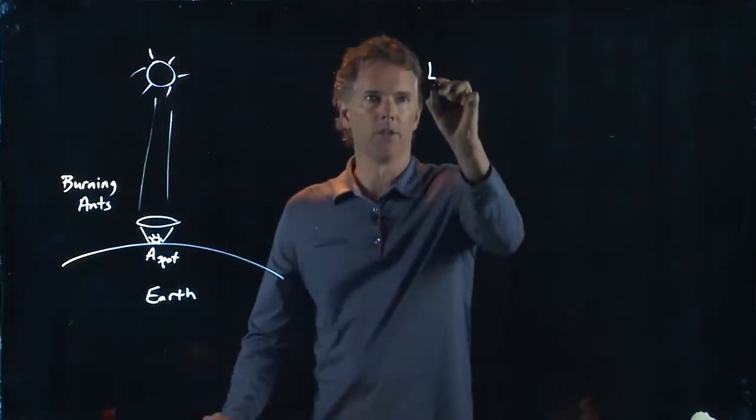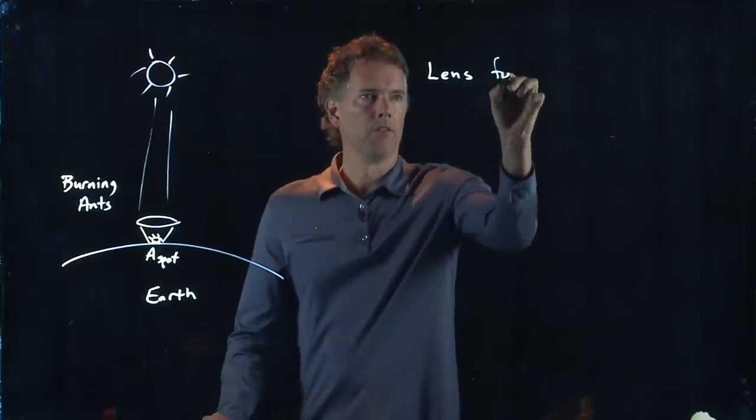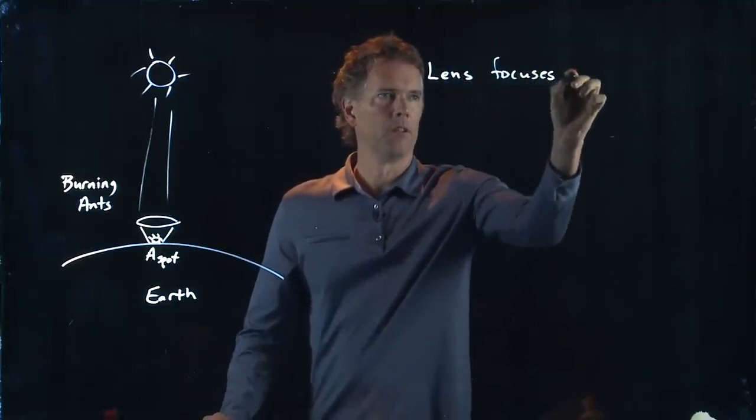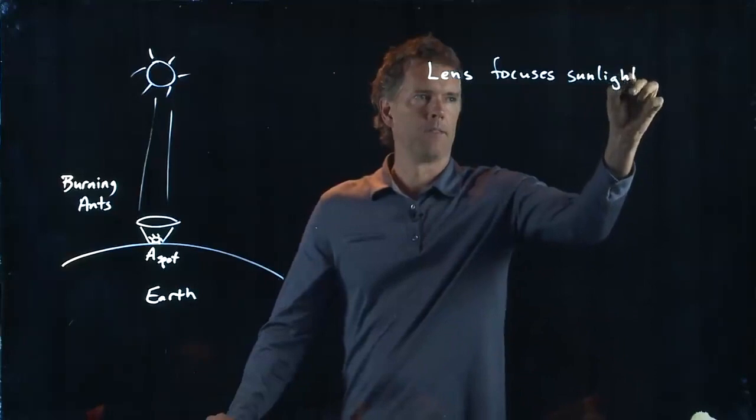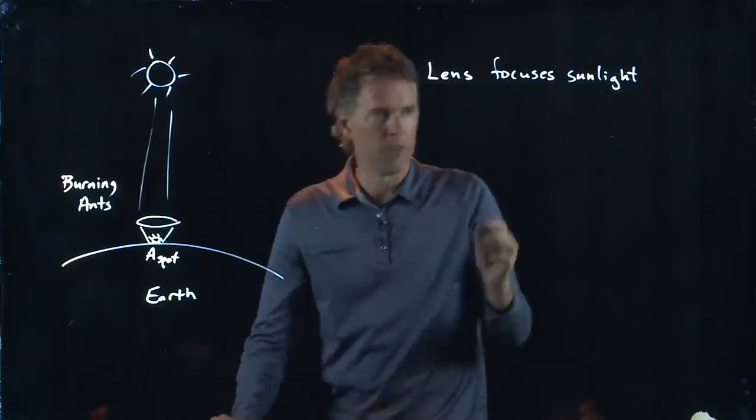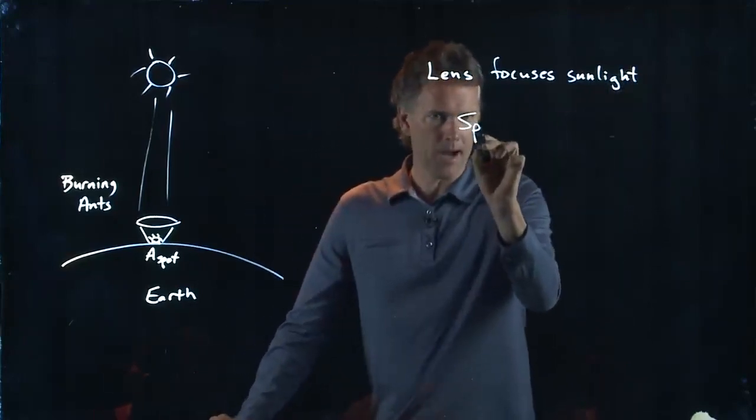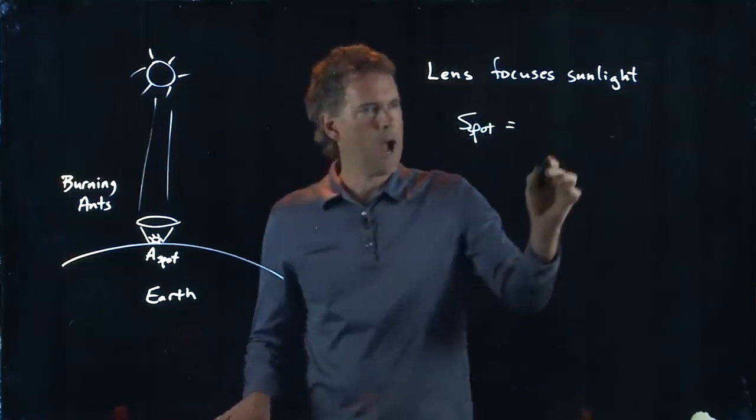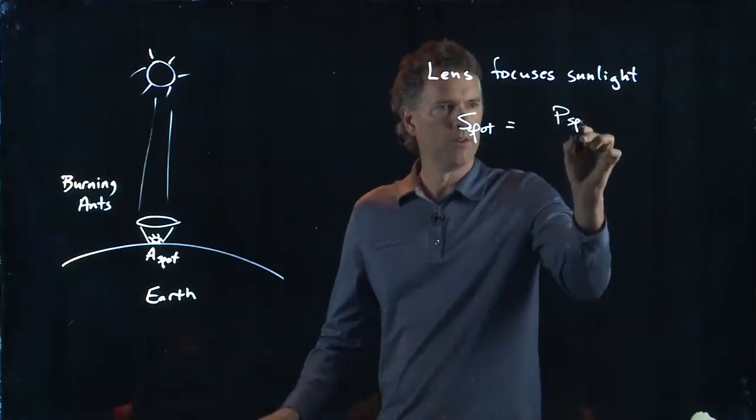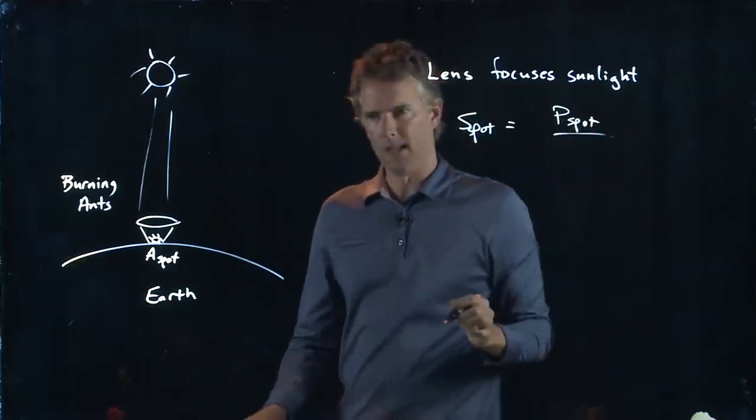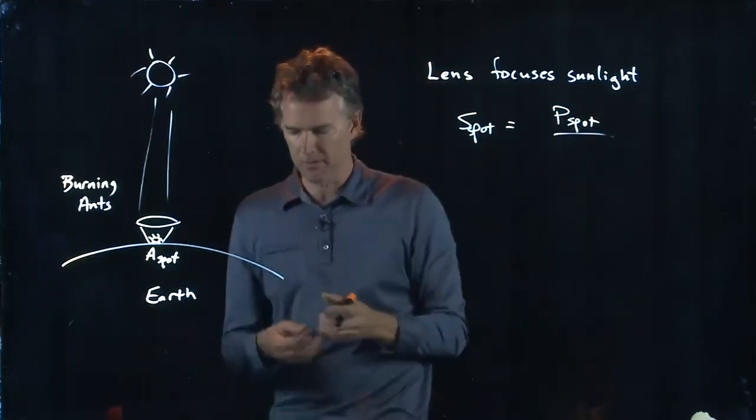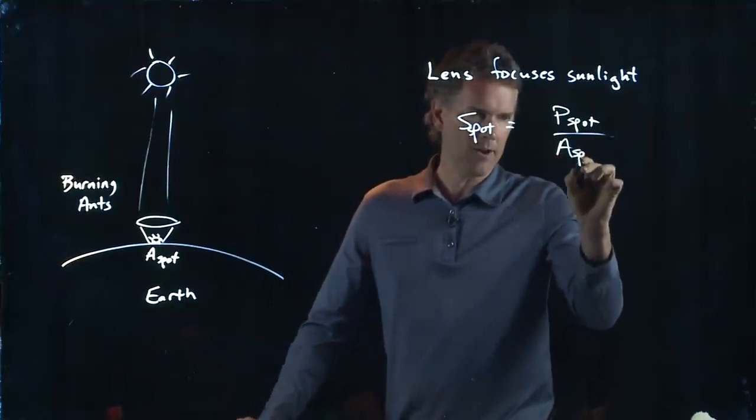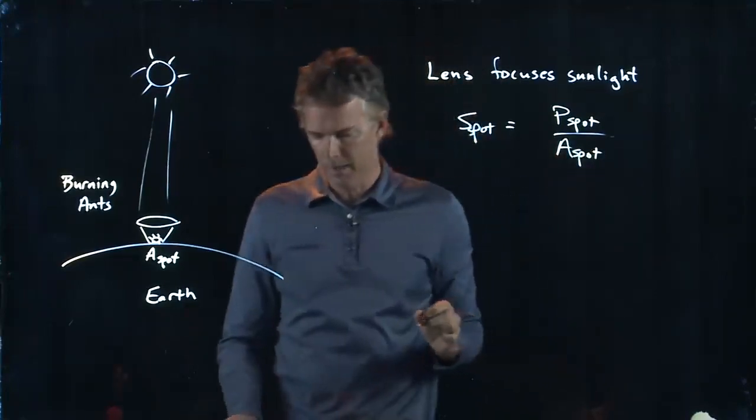So the lens focuses the sunlight and therefore the intensity at the spot is going to be how much power you've collected with your lens, or how much power is in that spot, divided by the area of that spot.